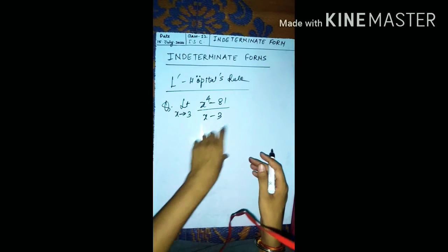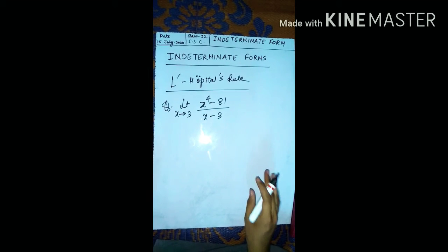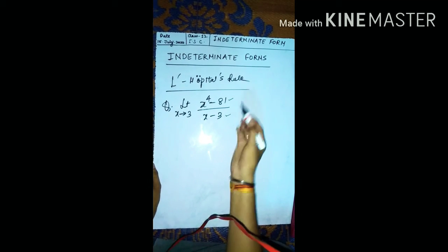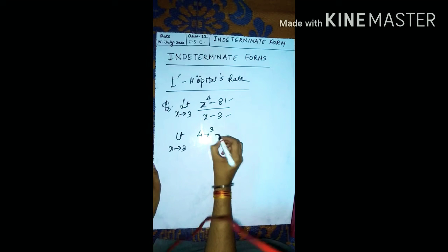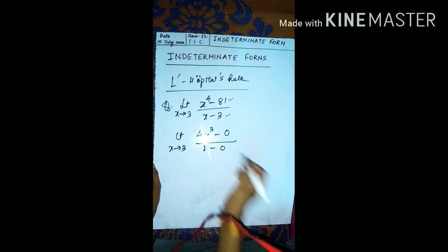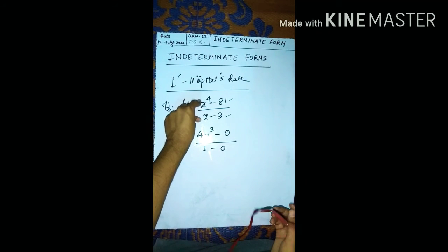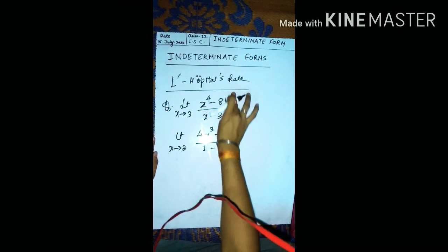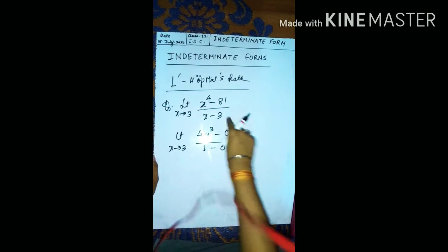So you write: this is 0 by 0 form, using L'Hôpital's rule. L'Hôpital's rule says you differentiate the numerator and separately differentiate the denominator. Differentiation of x to the power 4 is 4x cubed, minus differentiation of 81 is 0; and differentiation of x is 1 minus 0. Note: do not use the division rule — L'Hôpital's rule says to separately differentiate numerator and denominator only.